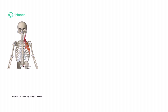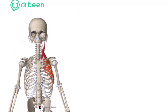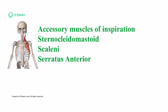Let us look at the accessory muscles for forced inspiration. Here is all of them. This is the sternocleidomastoid, scalenei muscles here. This is the serratus anterior. And of course, external intercostals we have already talked about. These are the accessory muscles of inspiration.